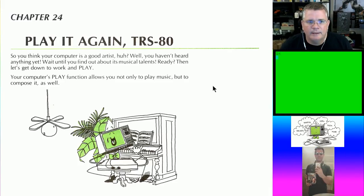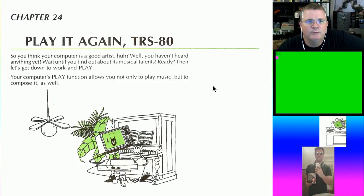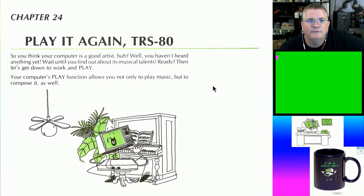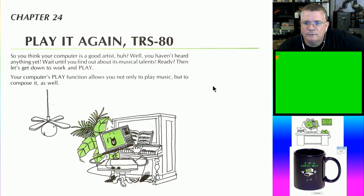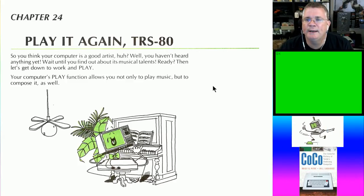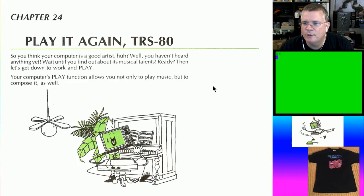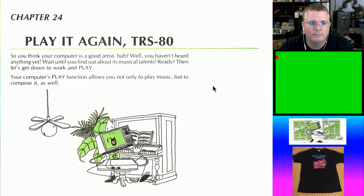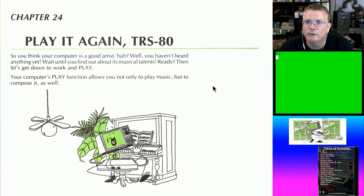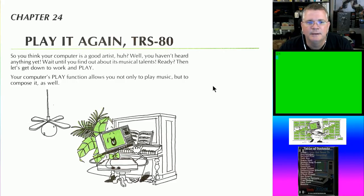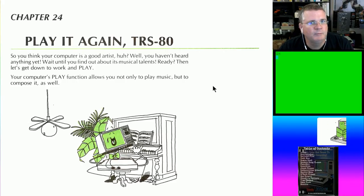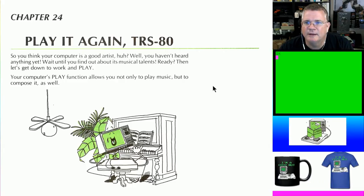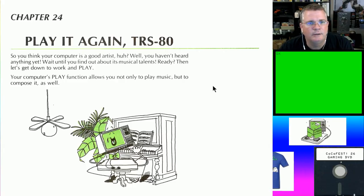We are now going to be looking at chapter 24 in the book, which is called Play It Again TRS-80. This is going to help us cover and understand the play command, which is an improved way to not only generate music and play musical notes, but for my interest — since I'm going to be working on developing a game — it's a great way to use BASIC to generate sound effects that sound better than what you get out of the normal sound command.